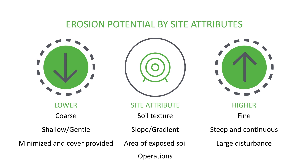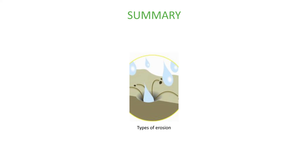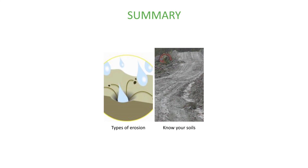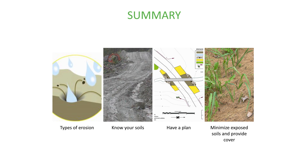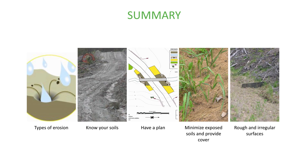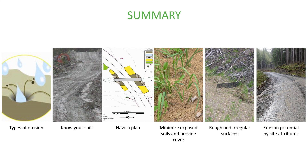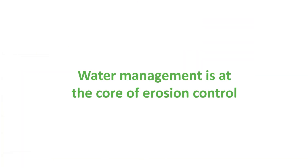Considering operations, it's the ongoing operations and those with heavy haul along the road network that will have the higher erosion potential compared to sites where operations have been completed or there's light truck use. In summary, we've touched on the types of erosion and their importance, the need to understand soil texture classes at your site, the importance of having and communicating an erosion and sediment control plan, minimizing exposed soil by amount and time, providing cover soon after exposure, keeping the surface rough and irregular, and erosion potential by site attributes. Water management is at the core of erosion control.